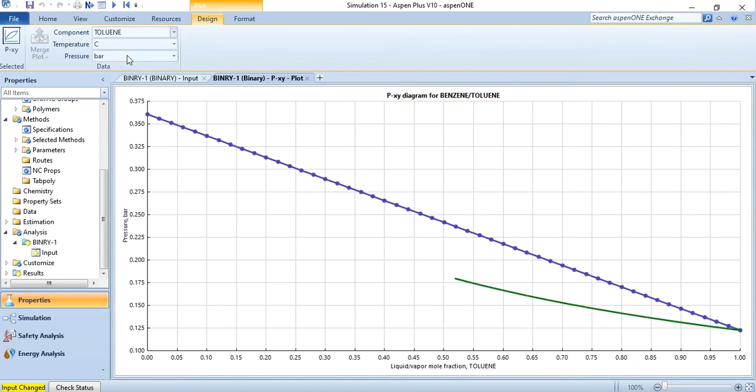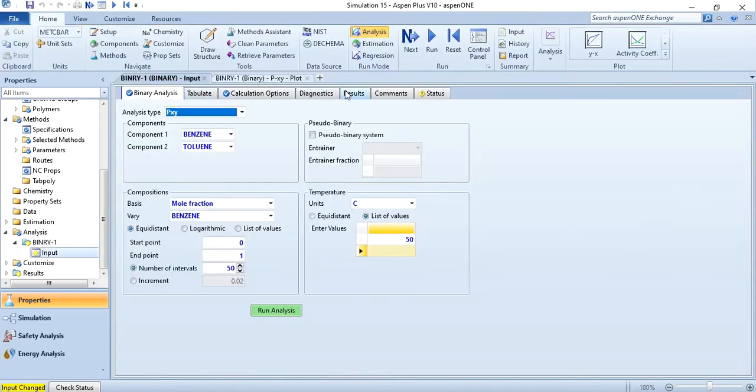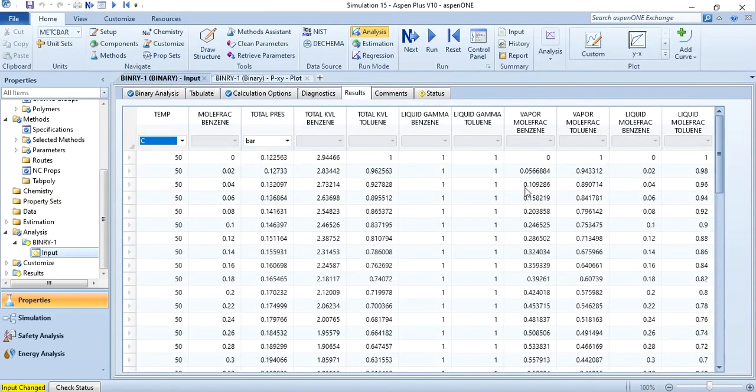And again it's for benzene. If I change it to toluene then the curve will be tilted to other side. And similarly you can also vary the units but it will not have any effect on the analysis. And if you want to go to the results you can also check the results in the tabular form as well. And the graphs are generated using these results as well.